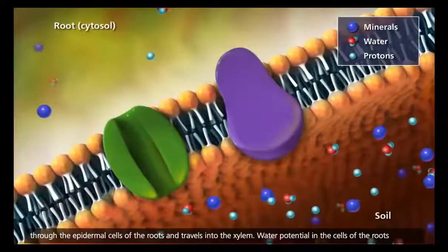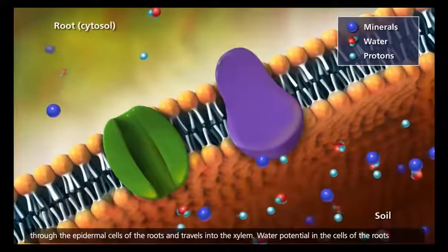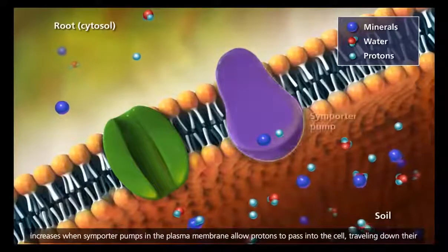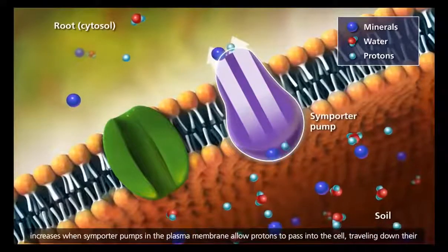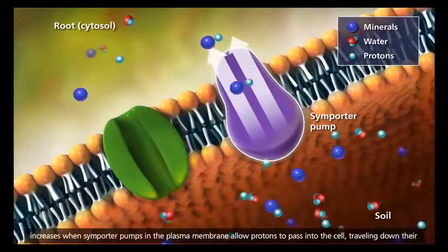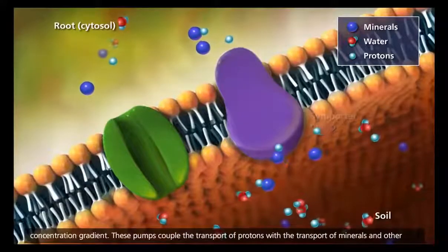Water potential in the cells of the roots increases when symporter pumps in the plasma membrane allow protons to pass into the cell, traveling down their concentration gradient.